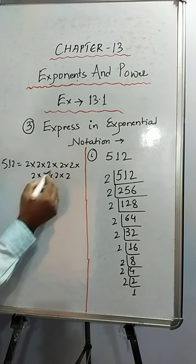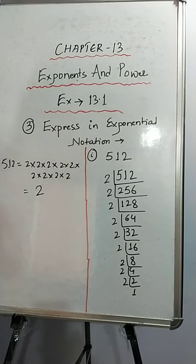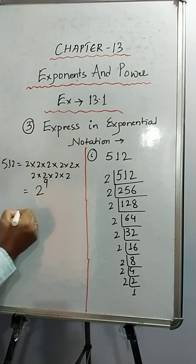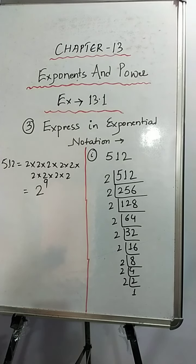And how to write this product form into the exponential form? So which is the number we are multiplying? 2, so 2 would be considered as base. And how many times we are multiplying 2? It is 9. So this is the exponential form of 512. I hope you have understood now.